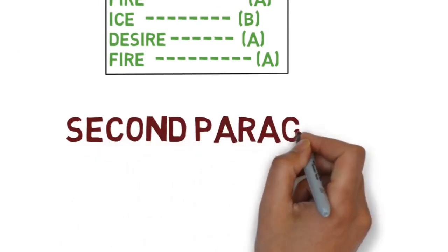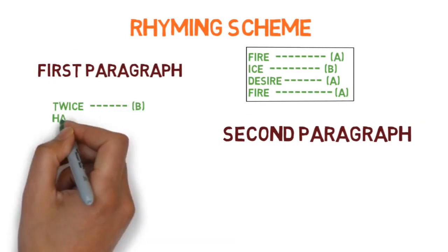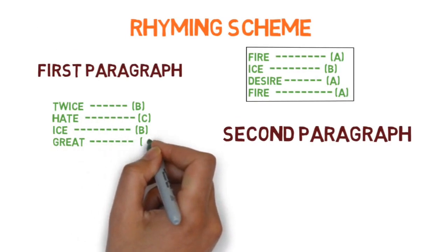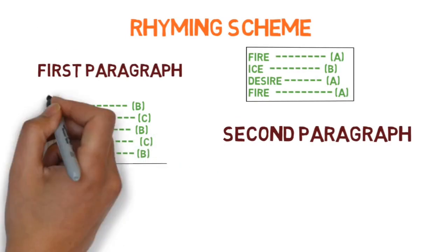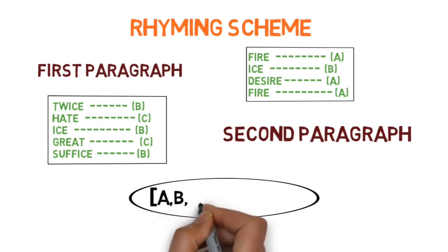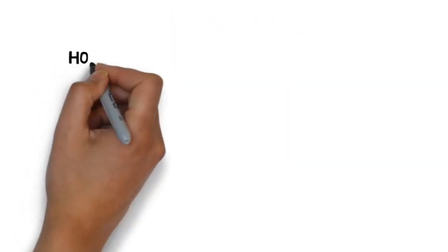In the second para, we also see what the rhyming scheme is. So twice which is equal to ice, so B. Hate is a little different so C. Ice again is B. Great is C because great and hate are the same, and suffice is B. So the rhyming scheme of the poem would be ABAABCBCB. This was all about the poem.